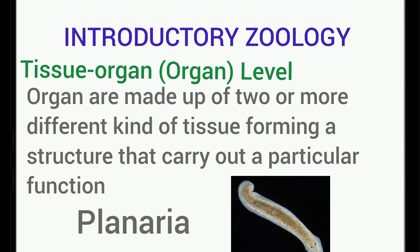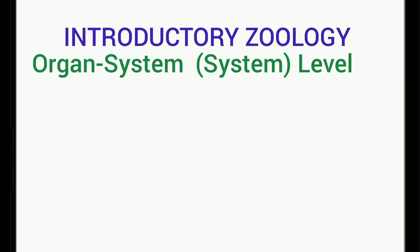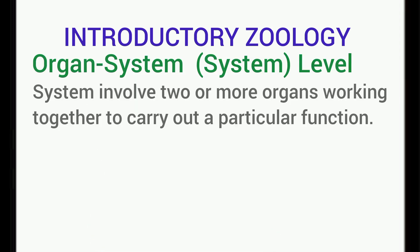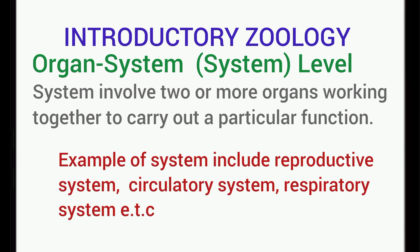The system level of organization in animals involves two or more organs working together to perform a particular function. The systems are associated with the basic functions in the human body such as respiration, circulation, digestion, and various other systems exist in the human body.